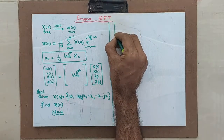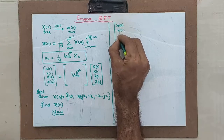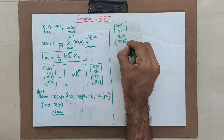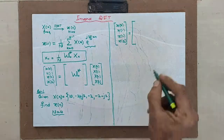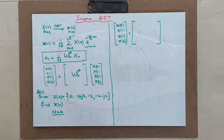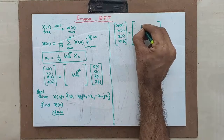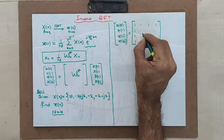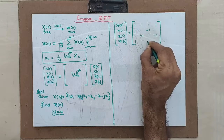Let me apply the matrix formula. I will write the time domain signal column x0, x1, x2, x3 equals the conjugate matrix times the input. Now, by this time you should know how exactly to write the 4-point twiddle factor matrix. The first two rows are all 1s. The third row is 1, minus 1, 1, minus 1, and the fourth column is 1, minus 1, 1, minus 1.